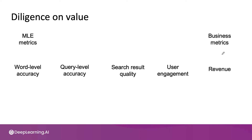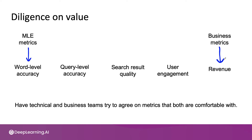One gap I've often seen between machine learning teams and business teams is that the engineering team will usually want to work on technical metrics, whereas the business leader may want promises on business outcomes. In order for a project to move forward, I usually try to have the technical and business teams agree on metrics that both are comfortable with. This often takes compromise where the machine learning team stretches a bit further toward business metrics, and the business team stretches a bit further toward technical metrics. The further we go toward business outcomes, the harder it is for the machine learning team to give a guarantee.